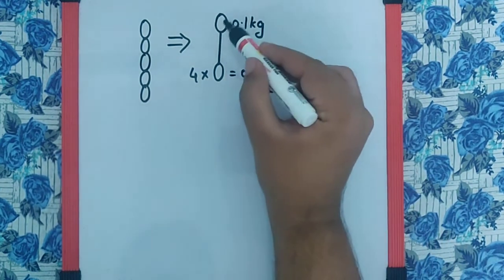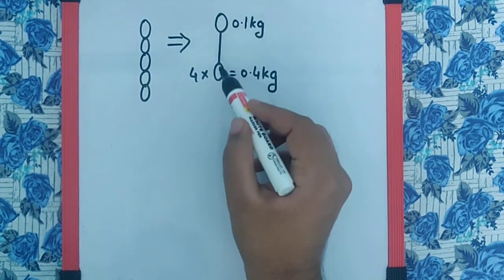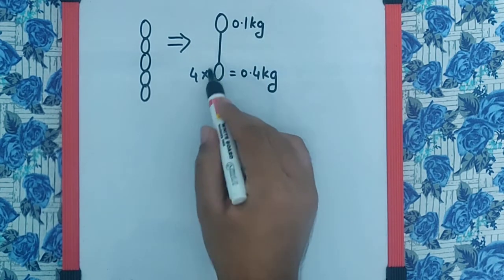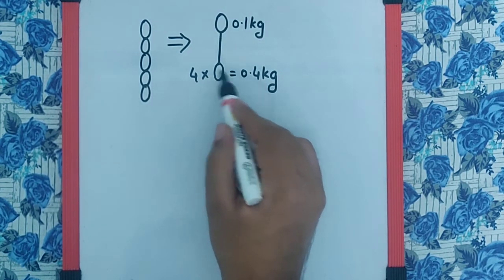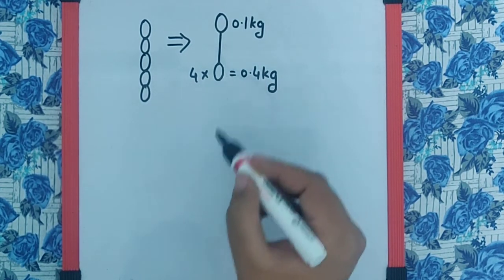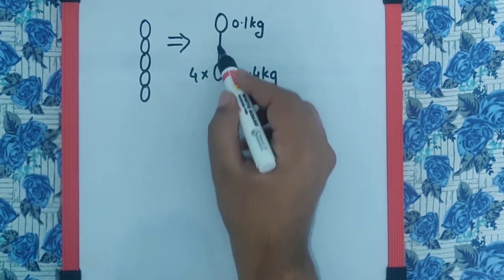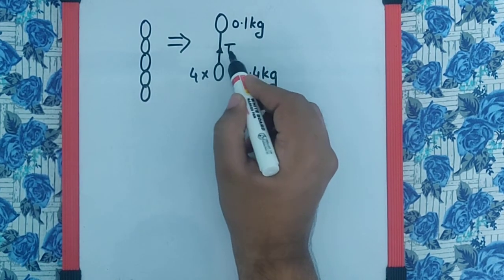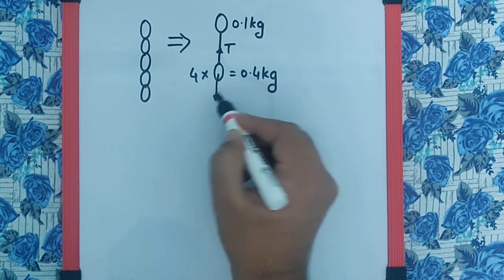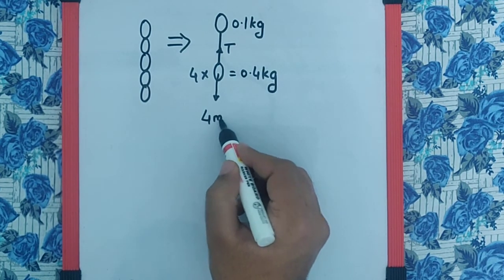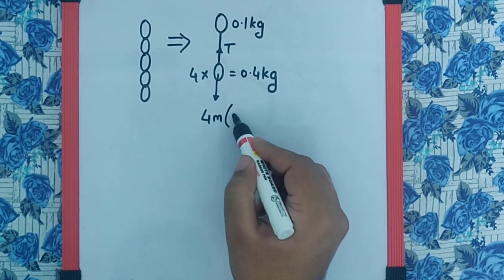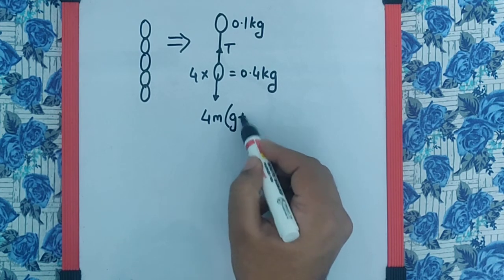So when this is pulled with an acceleration, this experiences a pseudo acceleration which is acting downwards, because of which the tension over here is not just mg, which would be 4mg, but it will be 4 times (mg plus a).